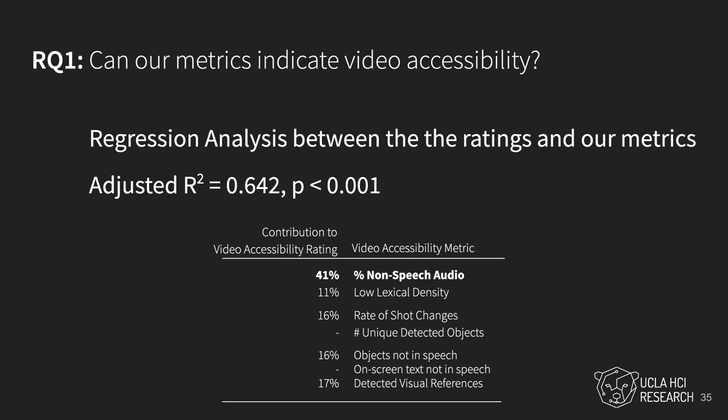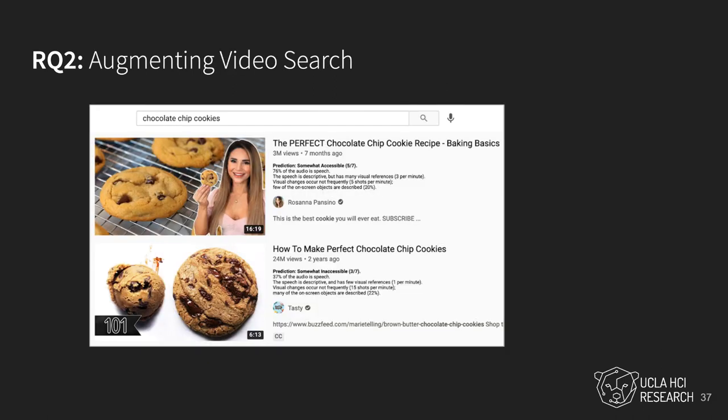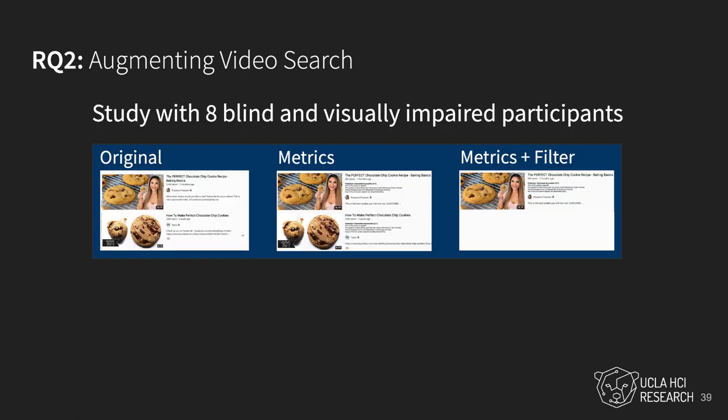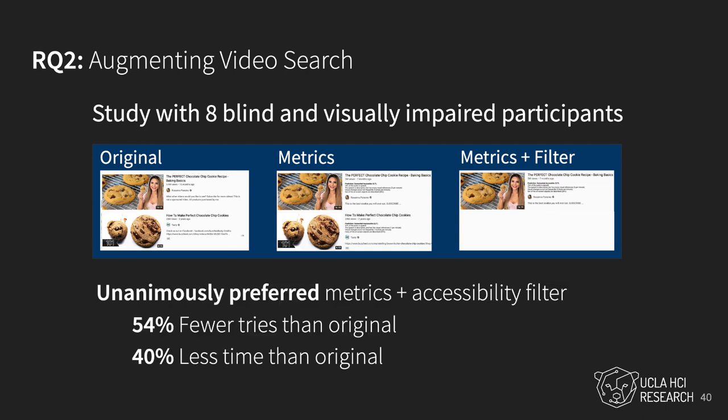A regression analysis indicated a statistically significant relationship between a video's accessibility and our proposed metrics. The percentage of speech alone contributed over 40% to the accessibility rating. We also created a video search interface augmented with our video accessibility prediction and metrics, and evaluated this interface in a user study of eight blind and visually impaired users. Participants unanimously preferred the metrics and filter interface when searching for videos. They tried 54% fewer videos and spent 40% less time finding a satisfying video compared to using the original YouTube interface.